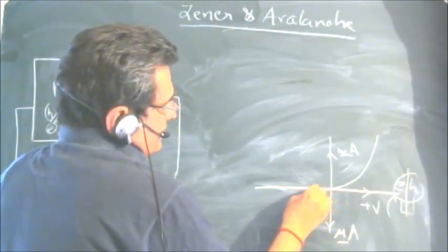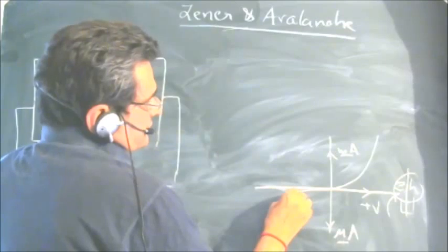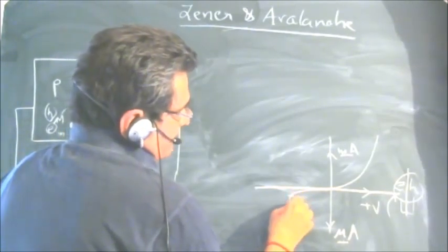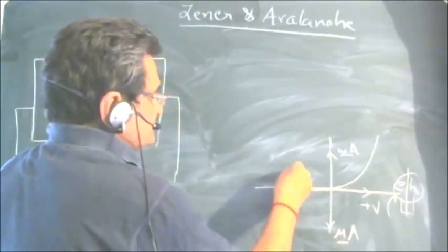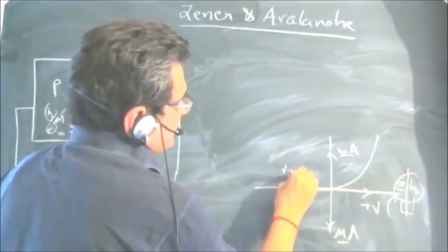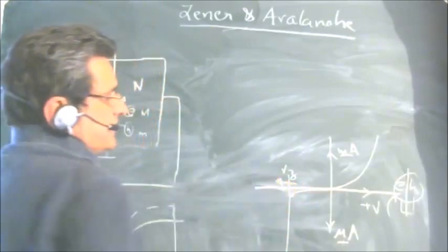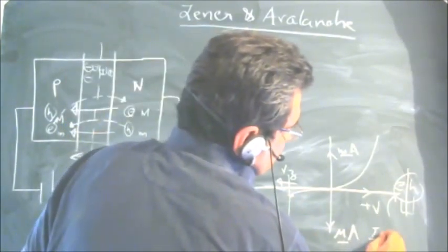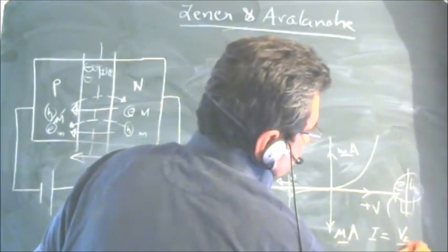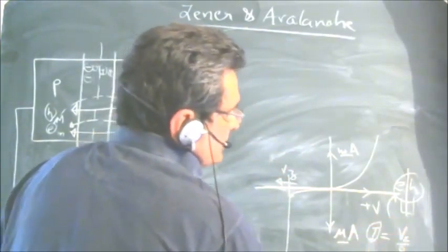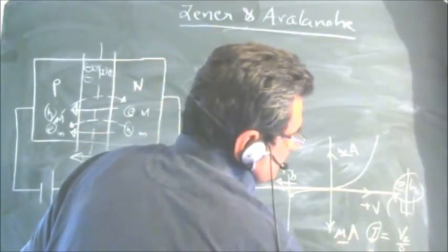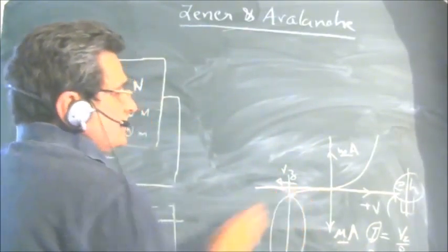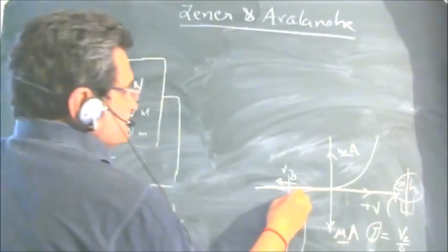In reverse bias, a very small drift current flows due to minority carriers. There is a knee point, and after that there is a sharp rise in current. This voltage is called Vz. Beyond Vz in the negative direction, current rises sharply. Since I = Vz/R and the current is very steep, R is very low — the diode offers very low resistance after the knee point.